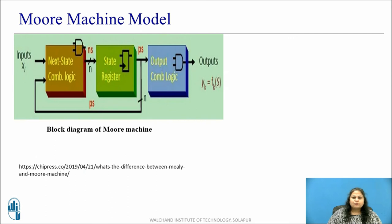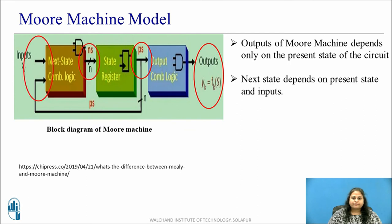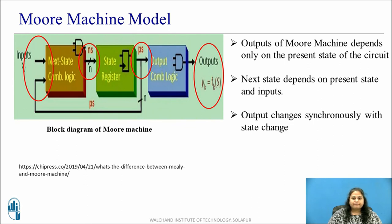Let us now discuss the Moore machine model. The block diagram shows that, unlike the Mealy machine, in the Moore machine the output depends only on the present state or current state of the circuit, and not on the input values. The next state depends both on present state and inputs, similar to the Mealy machine. As output changes with state change, we can say that the Moore machine has synchronous output.